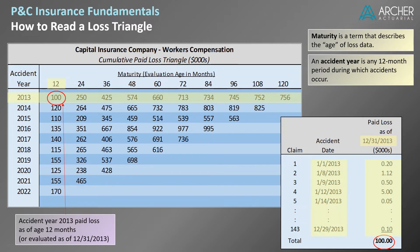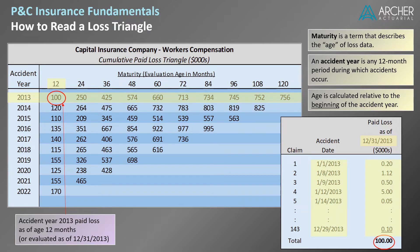Actuaries would refer to this data point as the accident year 2013 paid loss as of age 12 months. Alternatively, this point may be referenced as the accident year 2013 paid loss evaluated as of 12-31-2013. Here's an important nuance: the age of an accident year is always calculated relative to the beginning of the accident year. The only date that matters for constructing a triangle is the beginning of the accident year.